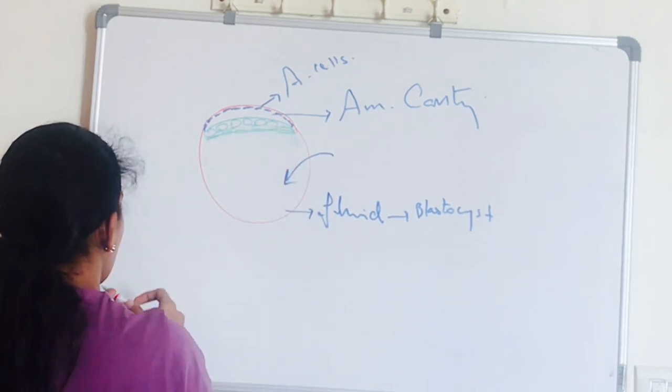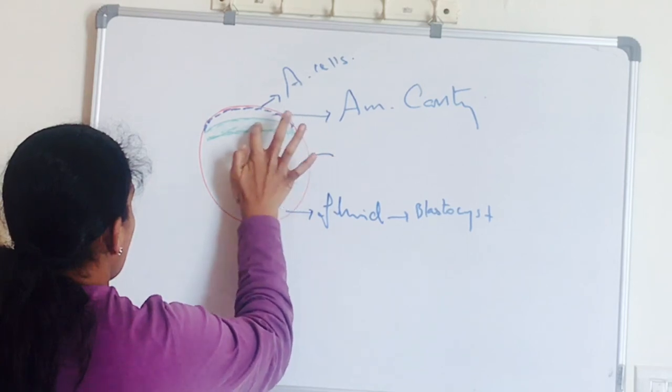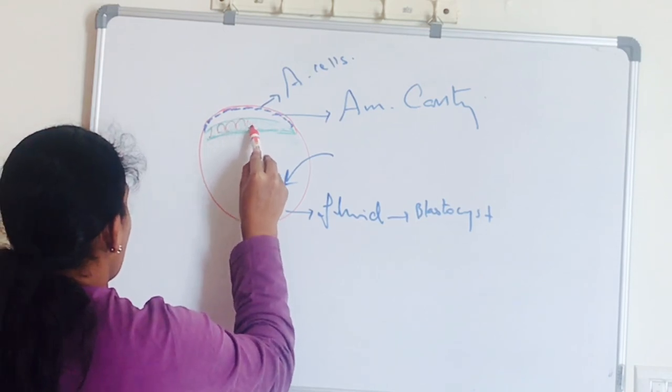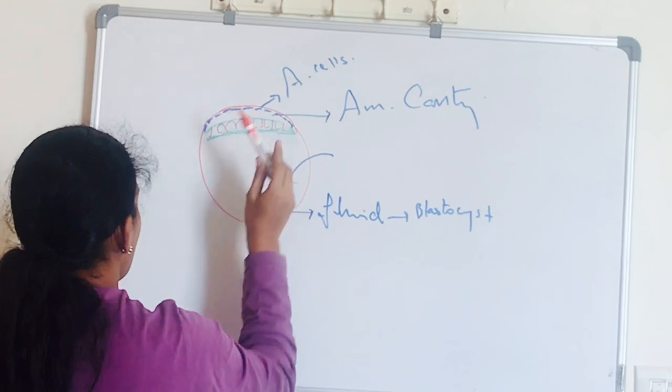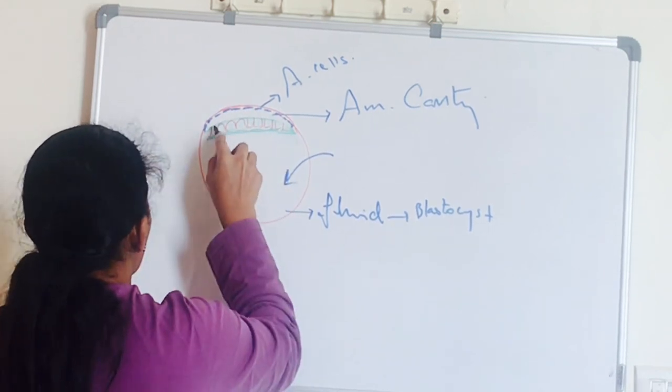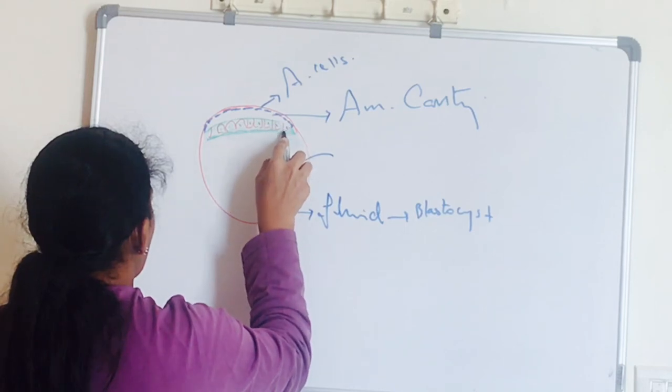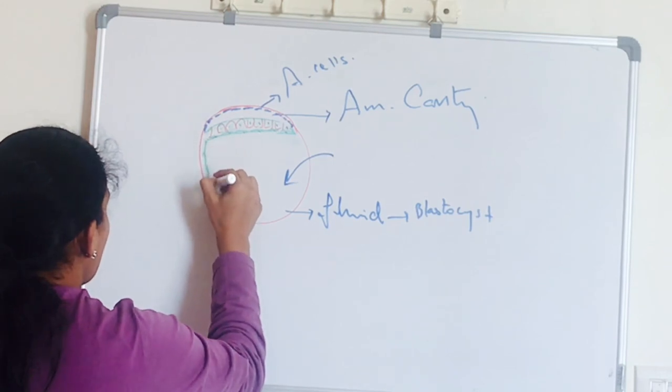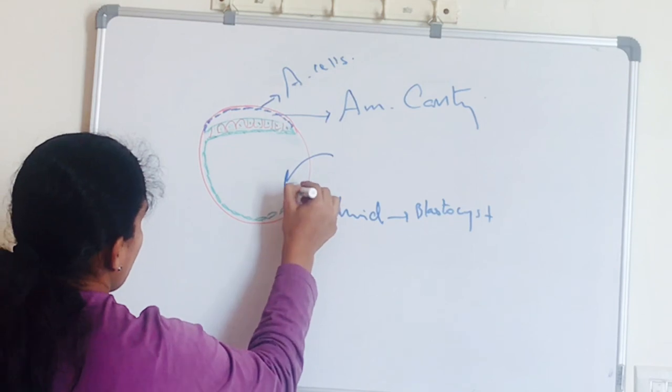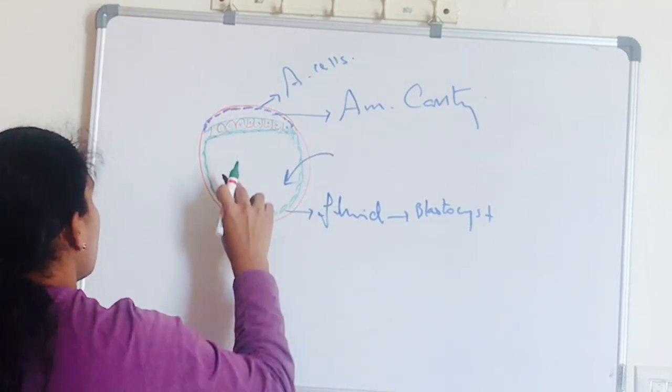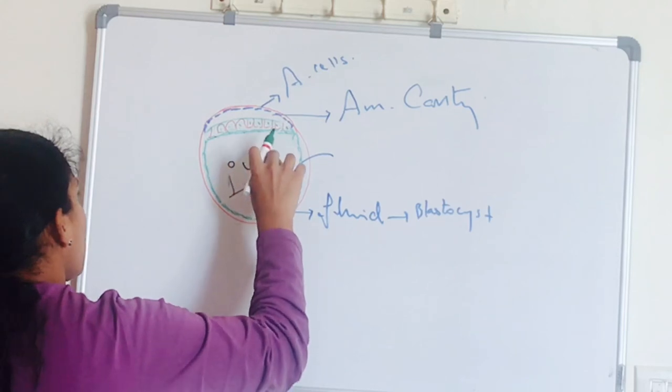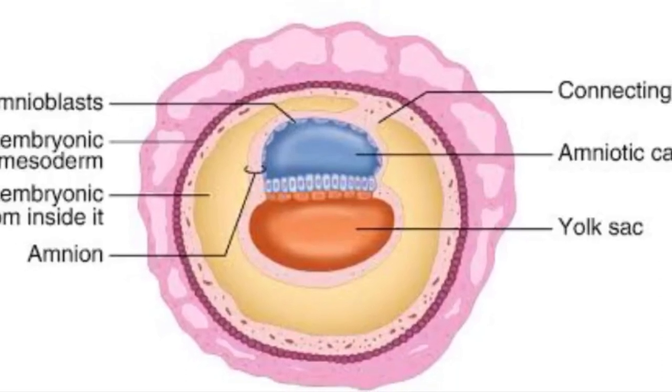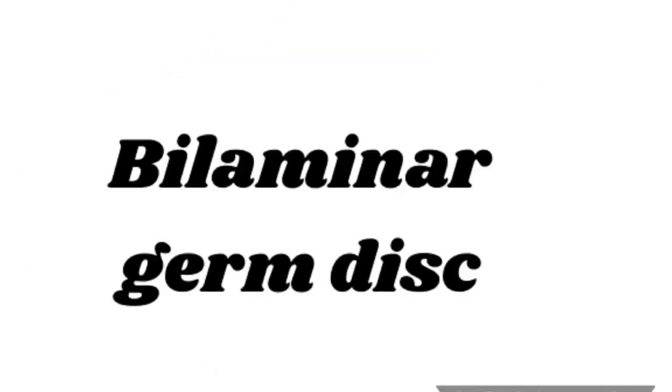Now some cells of the inner mass differentiate and become flattened. The upper layer is epiblast which are columnar cells, and the lower flattened differentiated cells spread itself to line the inside of blastocystic cavity. And this lining of flattened cells is called Heuser's membrane. This forms a cavity called primary yolk sac. Here you can see both the amniotic and yolk sac cavity.